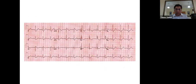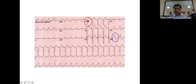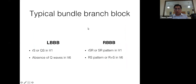This ECG demonstrates right bundle branch block with an RSR pattern in V1, QRS greater than 120ms. This is the typical RBBB pattern. Left bundle branch block shows V1 negative and broad QRS. The bundle branch block rule: positive in V1 is right bundle branch block; negative in V1 is left bundle branch block. RS or QS pattern in V1 plus absence of Q waves in V6 for LBBB; RSR pattern in V1 for RBBB.